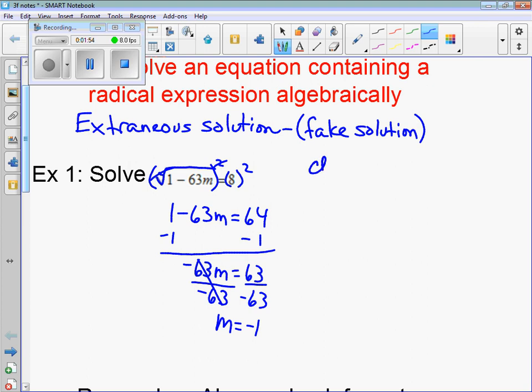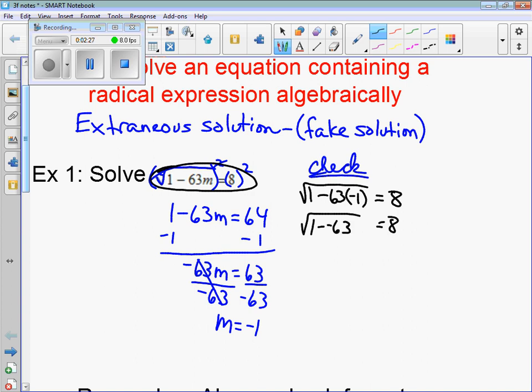If you check this, you always check it from the very beginning. So check it from the start. We have the square root of 1 minus 63 times negative 1. So substitute it in for m. And the right side is just equal to 8, so I'm not really worried about that right now. It's the left side, we just have to simplify it. So we have 1 minus 63 times negative 1 is negative 63. We'll do that first. 1 minus negative 63 is 1 plus 63. So it's still going to equal, hopefully it equals 8 at the end. 1 plus 63 is 64, and the square root of 64 is 8.